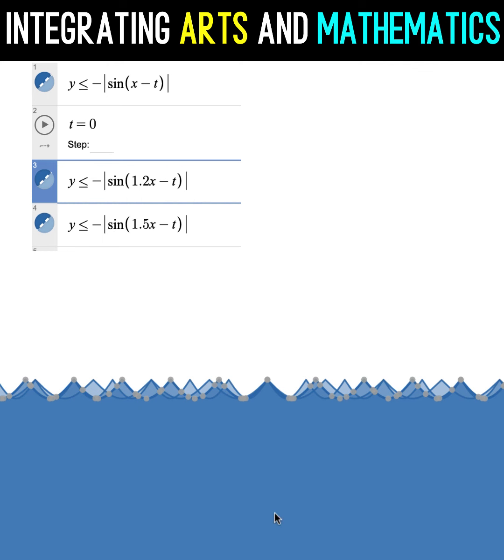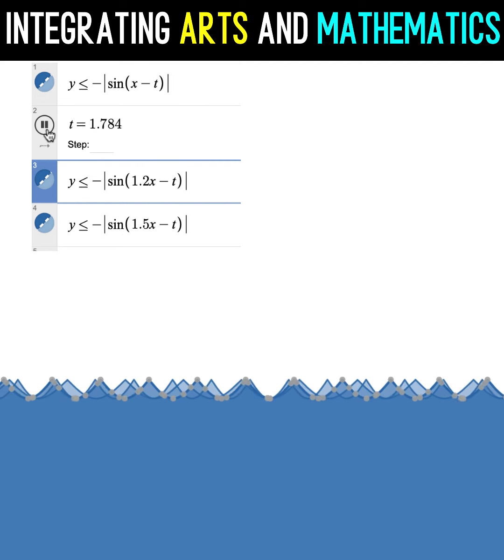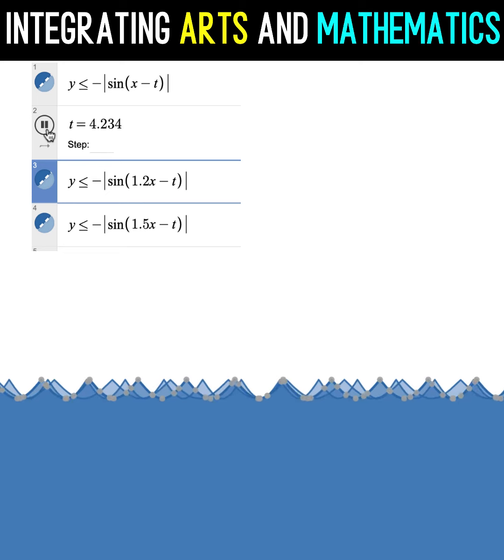Notice that we have here a darker part. That is because when you have several intersections of these graphs, the darker would be the shading here. But those parts without intersection are the lighter blues. Now let's animate these three graphs of the sine function. And you will now have these moving waves.